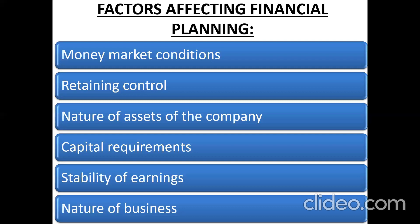Number three — the nature of assets of the company. The nature of assets refers to whether the business has enough assets to mortgage or not. When the business unit does not have fixed assets of higher value and cannot mortgage them, it should not issue debentures, because debentures is a secured loan and one will have to mortgage the asset if money is to be raised. In that case, the company should rely on equity shares only. Otherwise, if they have enough assets available to be mortgaged, they can go for raising funds through debentures.